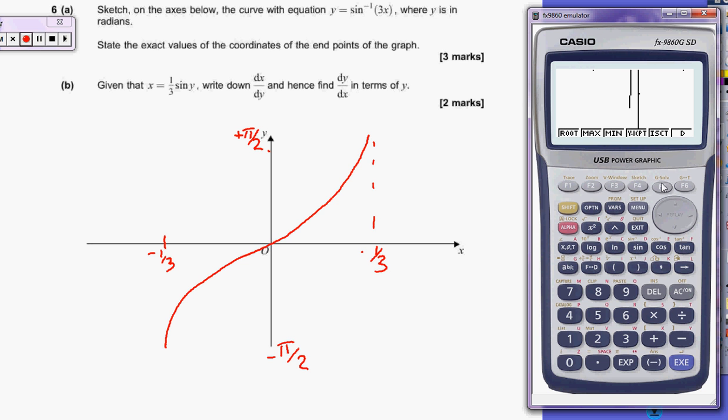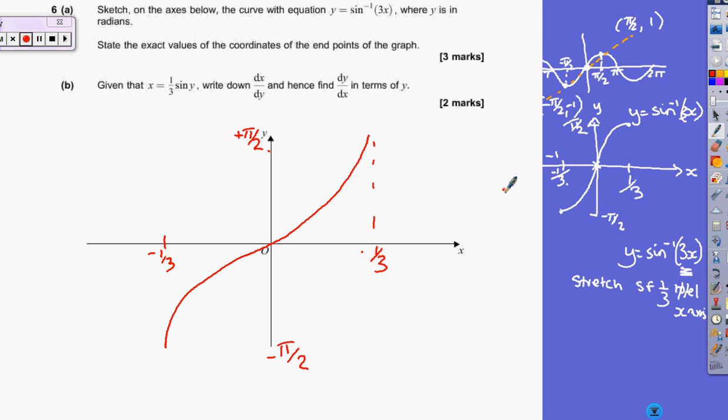But at least then you can look at some of the values. So you could check. If you wanted to check, we could put in an x value of 1 over 3, and it gives you a y value of that, which you need to check, but that is definitely pi by 2. So we are correct on what we're looking for. It's just not always getting the best view of what we're trying to get.